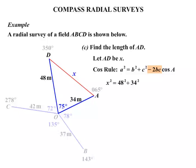And we've got minus 2BC. The B and the C are the 48 and 34 again. So minus 2 times 48 times 34. And finally, COS A, where A is the angle. So we multiply by the COS of 75.